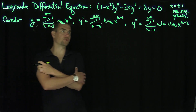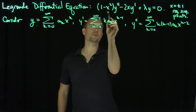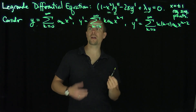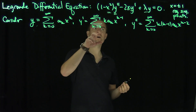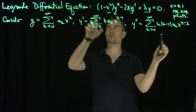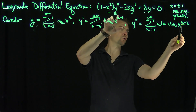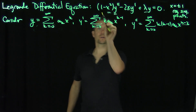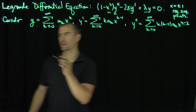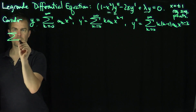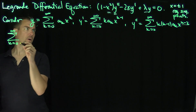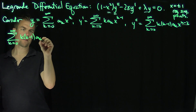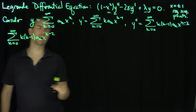Now let's group the terms efficiently. Notice that the x² term times y'', the x·y' term, and the y term all have the power x^k. Because multiplying x^(k-2) by x² gives x^k, and multiplying x^(k-1) by x also gives x^k. Looking at the y'' term, we have the sum from k = 0 to infinity of k(k-1)·a_k·x^(k-2).